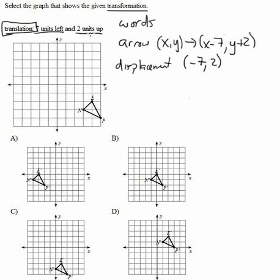So all three of these things, seven units left and two units up, (x, y) arrow (x minus seven, y plus two), and then just minus seven, positive two, these are all the same ways of saying the same translation. Now let's actually do it.